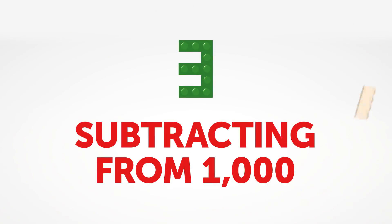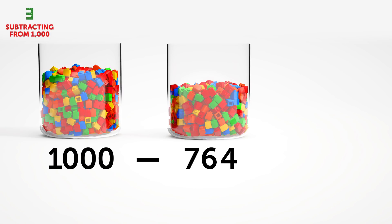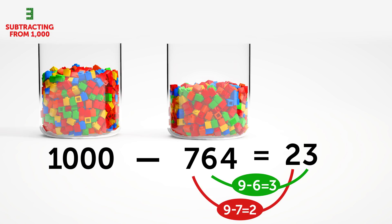3. Subtracting from 1,000. There's an easy rule for subtracting from 1,000. Just subtract all the digits from 9 and the last digit from 10.